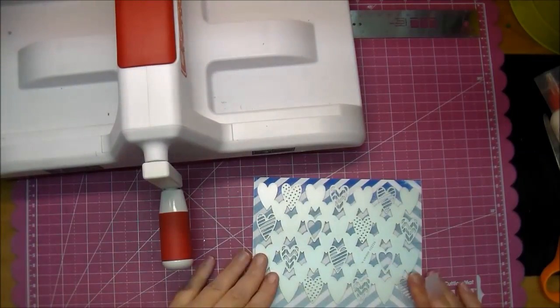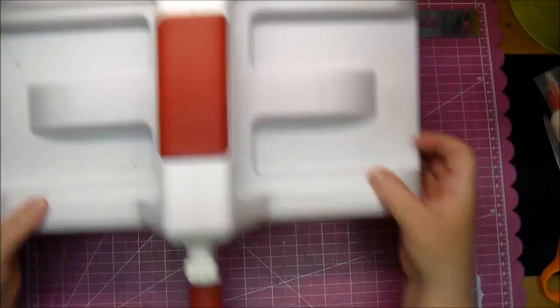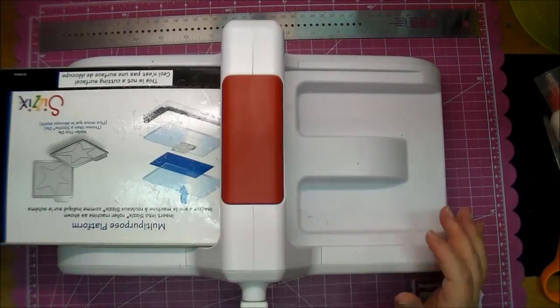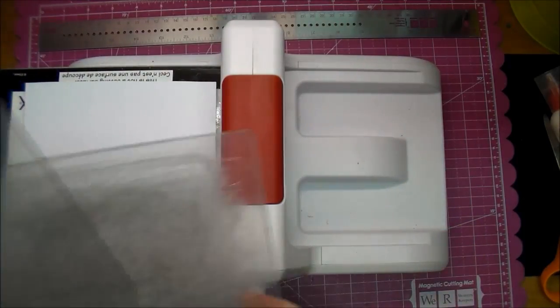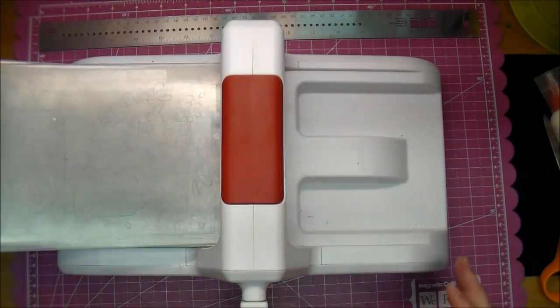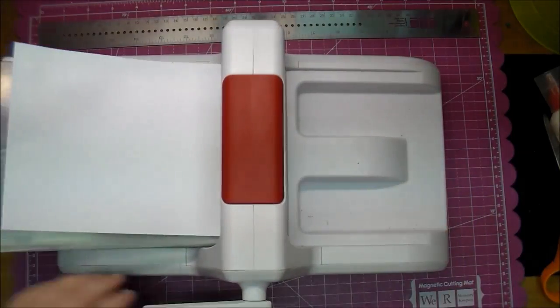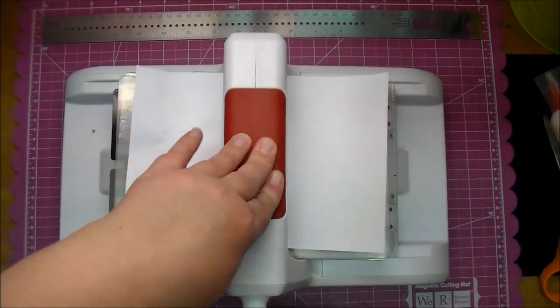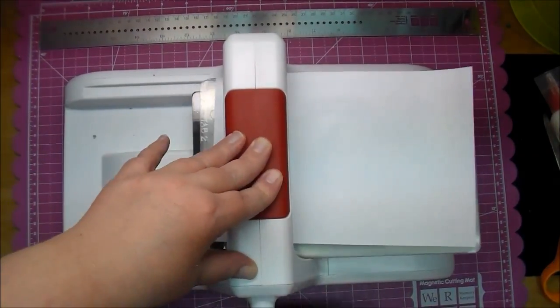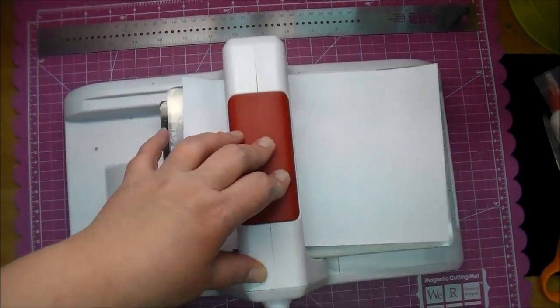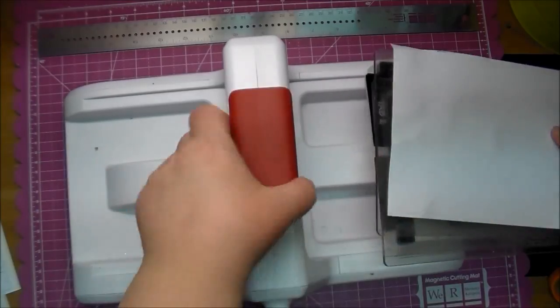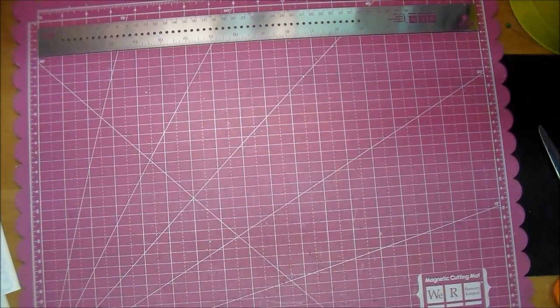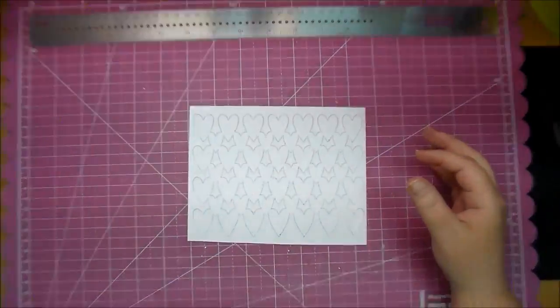I'm using a piece of Heidi Swapp mixed company paper and I'm adding my die to it with a little bit of scotch tape so it'll hold it in place. I am placing it on my multi-purpose platform with the cut side up along with a cut plate and a regular plate, and that white piece of paper you see there is just white cardstock. I'm using that as a shim so it really gives it a lot of pressure as I run it through a few times, and that way it gives me a perfect cut.